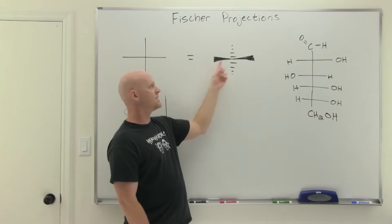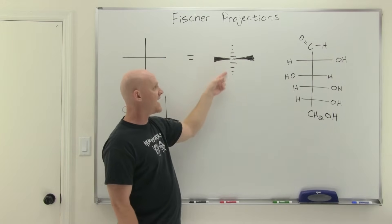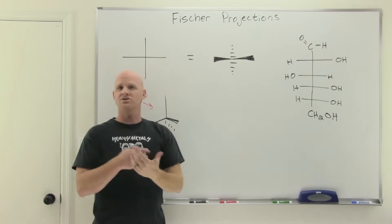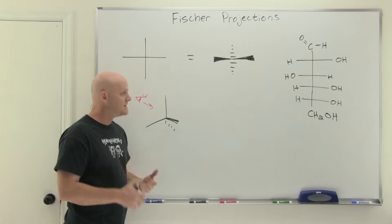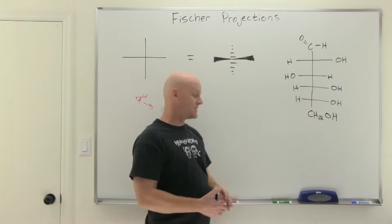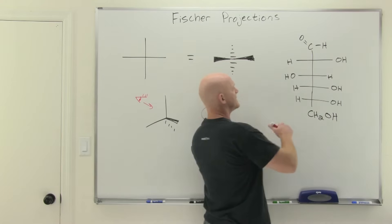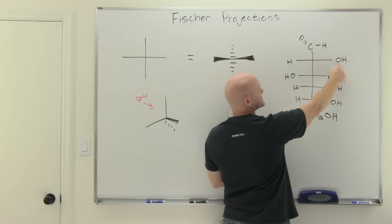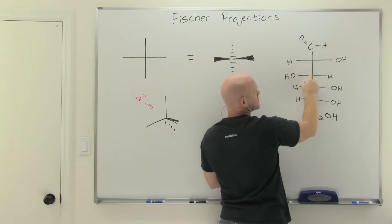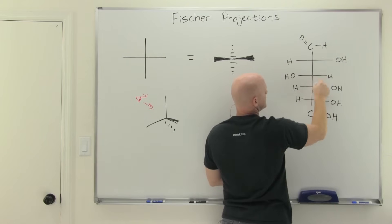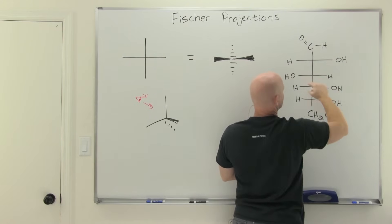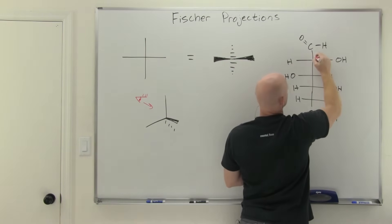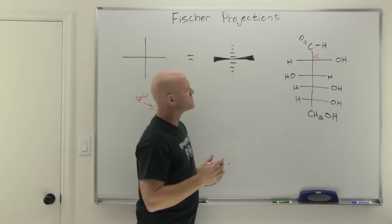Your number four priority will either be a wedge or a dash. If it's a dash, a right-handed turn means R and a left-handed turn means S. If it's a wedge, it's the opposite. Because all bonds are represented this way in a Fischer projection, it's easy to assign R and S. For the first chiral center of D-glucose, oxygen is number one, the adjacent carbon with two bonds to oxygen is number two, and the next carbon is number three. Going around gives a left-handed turn, but the number four priority is a wedge on the horizontal, so instead of S it's actually R.